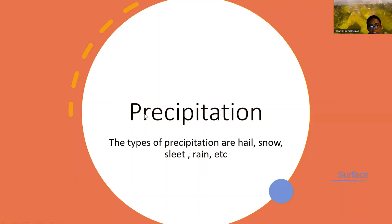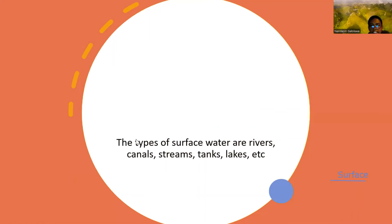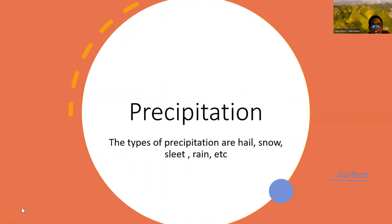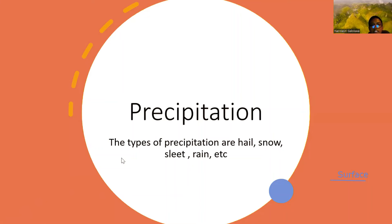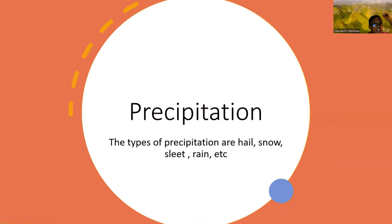The types of precipitation are hail, snow, sleet, rain, and so on. The types of surface water are rivers, canals, streams, tanks, and lakes.